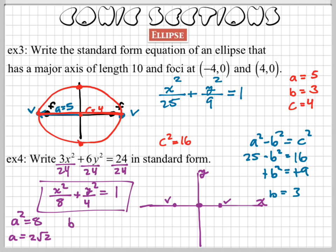My b squared is 4, so what's my b? 2. So now I count up 2 and I count down 2 to find my covertices. And I have an ellipse.